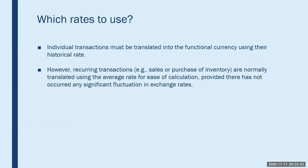We use the historical rate for most types of transactions. But for recurring transactions such as sales or purchases of inventory that happen on a fairly regular basis, these are often translated using an average rate for the period to facilitate ease of calculation — provided there is not a whole lot of fluctuation in the exchange rates. If exchange rates have been more or less stable, you can simplify the process by using an average rate to convert a whole bunch of transactions all at once.